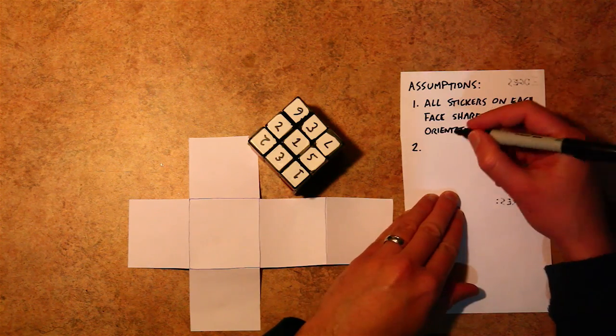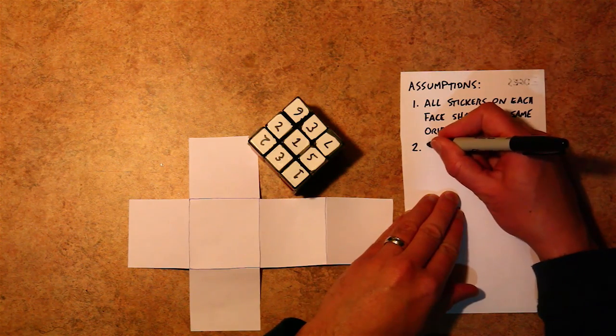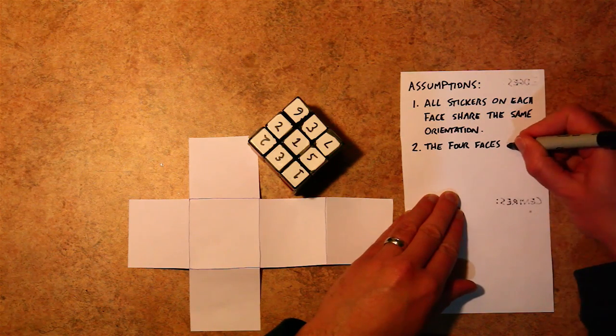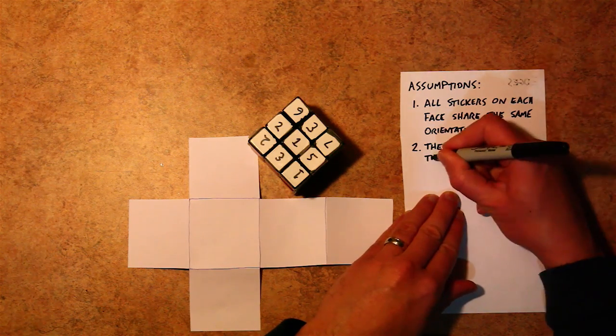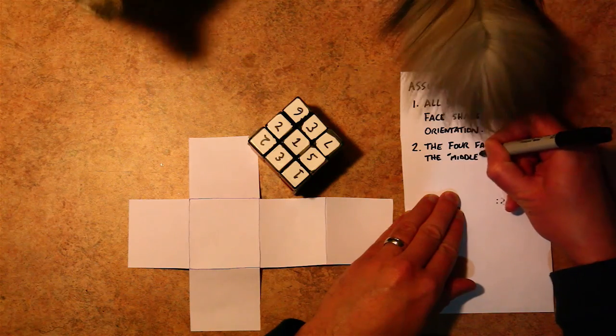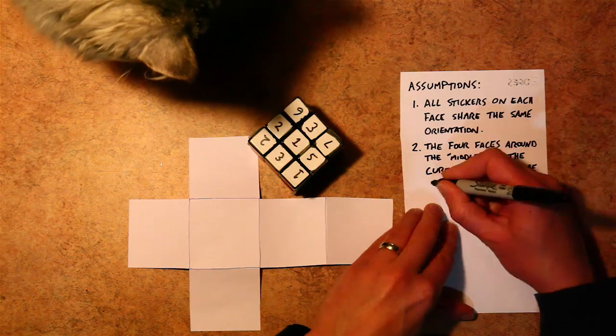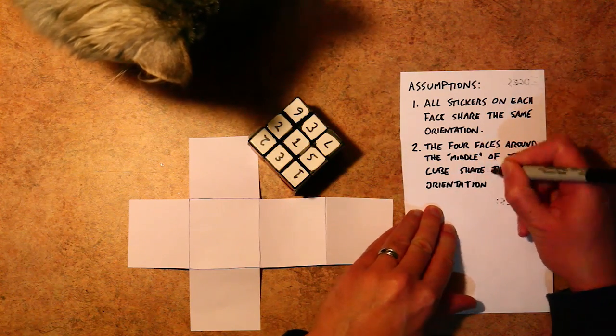The second assumption we're going to make is that the four faces around the middle of the cube share the same orientation. This is true for most of the cubes that I've seen. Again, if this is not true for your cube, it's going to be slightly harder to solve.